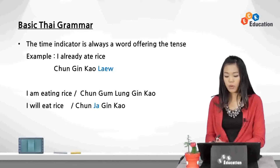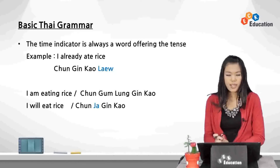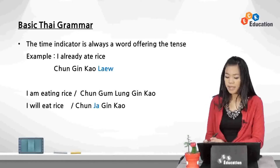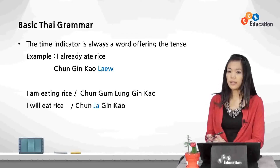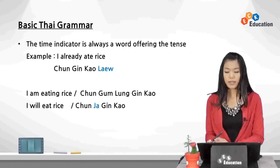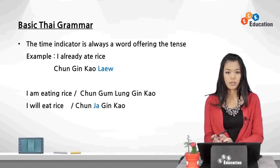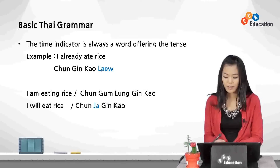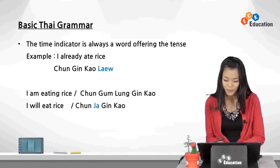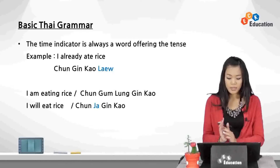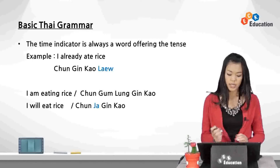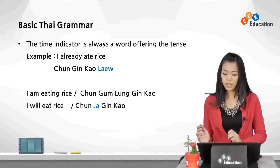Another example: 'I am eating rice' — which tense is this? Yes, present continuous tense. So, chan gam lang gin kao. Chan means 'I,' gin means 'eat,' kao means 'rice.' Can you guess which word is the time indicator? Yes, gam lang — which means 'to be going to' in English, showing the continuity of the action. Chan gam lang gin kao — 'I am eating rice.'